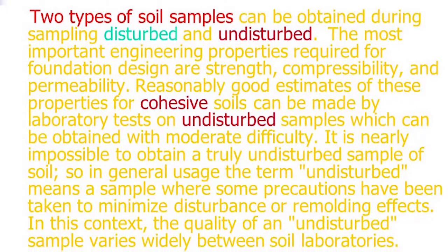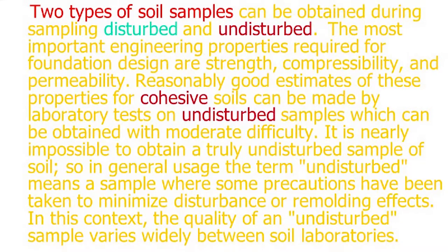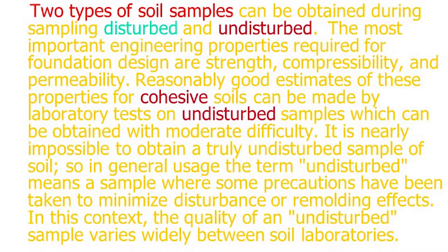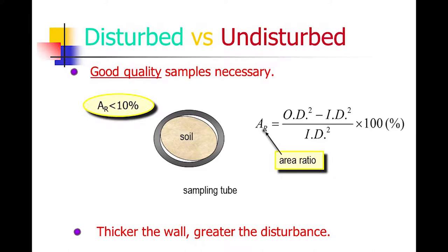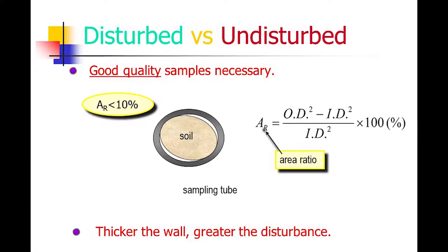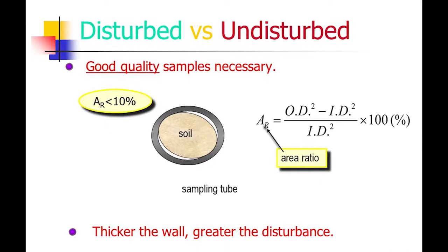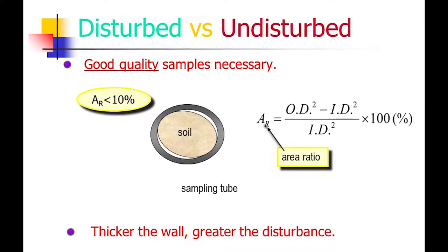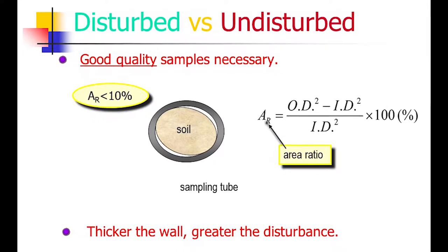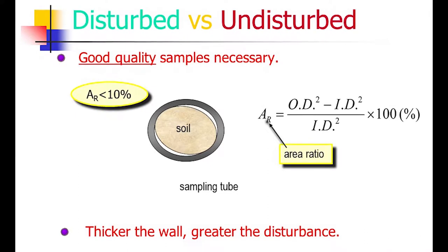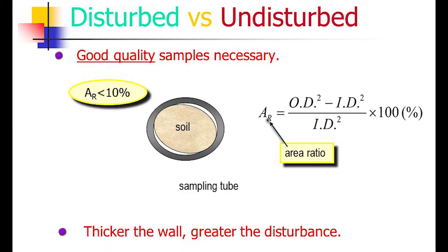Remolding effects: disturbed samples are brought to the laboratory and remolded. For the area ratio of a sampling tube, the formula is: (outer diameter² minus inner diameter²) divided by inner diameter², multiplied by 100. This value should be less than 10% for the sample to be considered an acceptable undisturbed soil sample. The thicker the wall of the tube, the greater the disturbance.